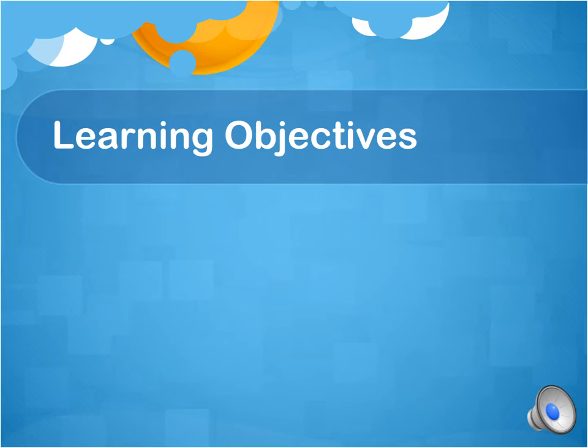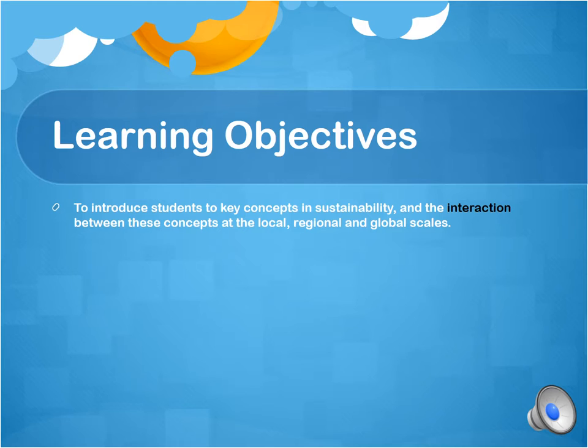Let me move on to the learning objectives, which are also detailed in the syllabus. First and foremost, it's about introducing students to key issues in sustainability — not in isolation, but how they interact with each other. This is really about understanding these interactions at different scales. We'll look at issues that go from local to regional to global scales, and different issues will be approached from any of these scales.